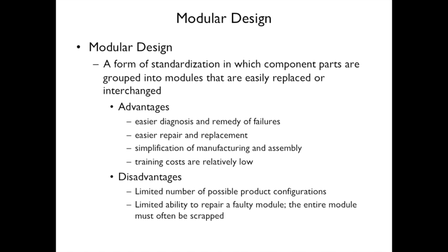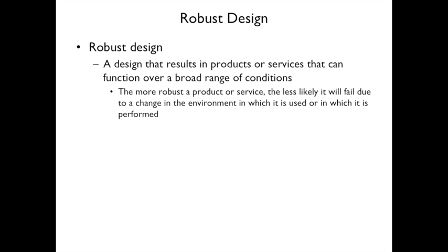Modular design means you have interchangeable component pieces. An advantage is it's easier to find failures because you can diagnose individual pieces. A disadvantage is you may have fewer product configurations. A computer is a great example of modular design — you can have different hard drives, different amounts of memory, and even upgrade the processor. You can also combine modular design with delayed differentiation: computer parts are ready and as soon as you order, they install the right hard disk and memory and ship it.